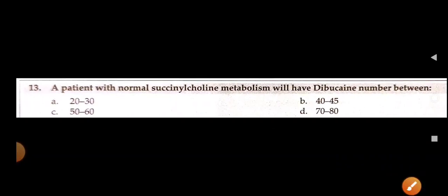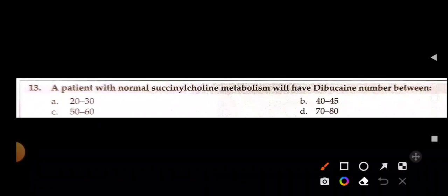A patient with normal succinylcholine metabolism will have a dibucaine number between — 20–30, 40–45, 50–60, 70–80? The answer is 70–80. A normal dibucaine number is 70–80, indicating normal pseudocholinesterase enzyme activity.